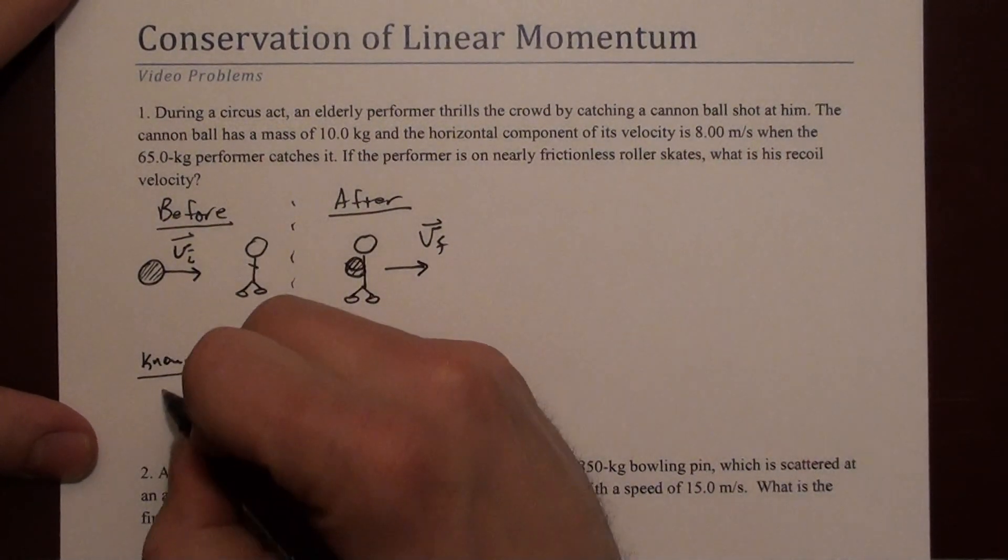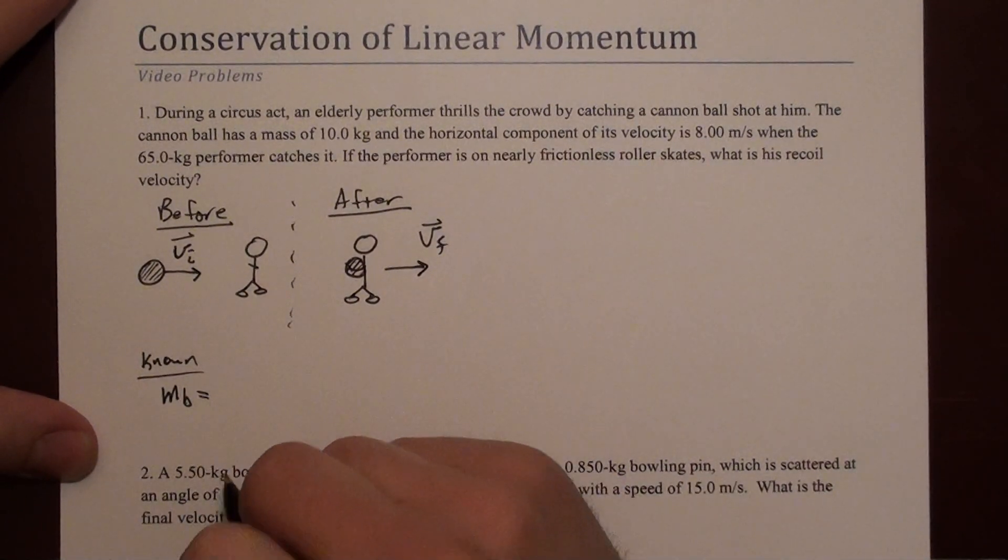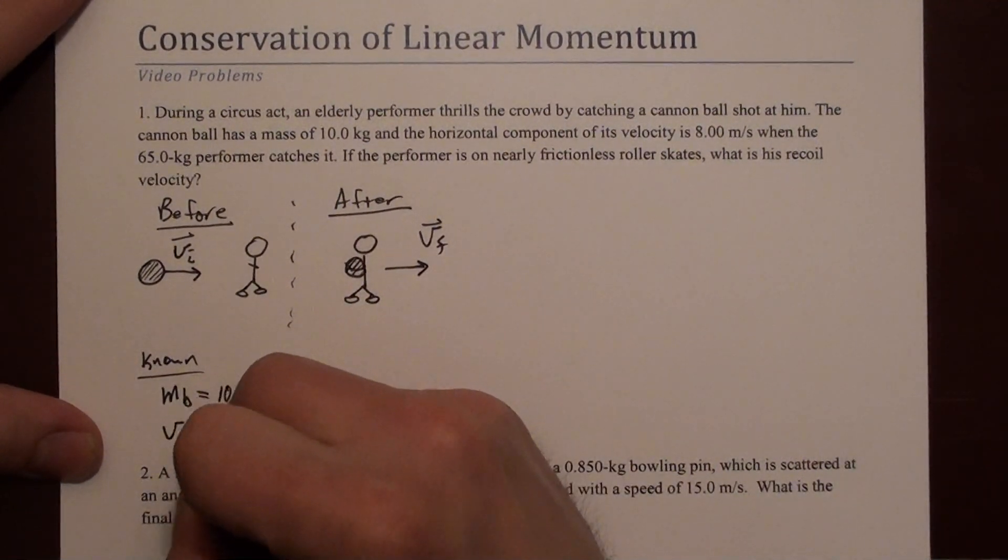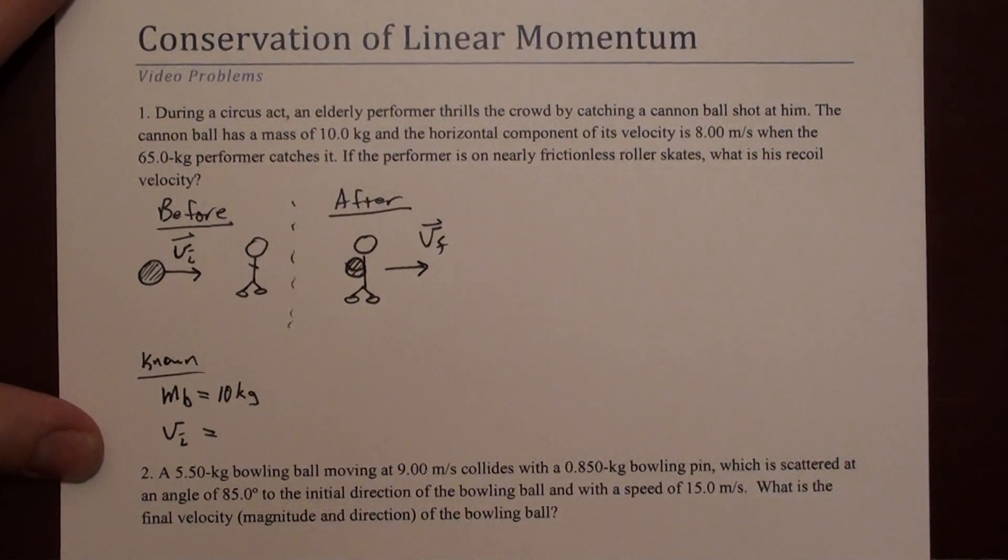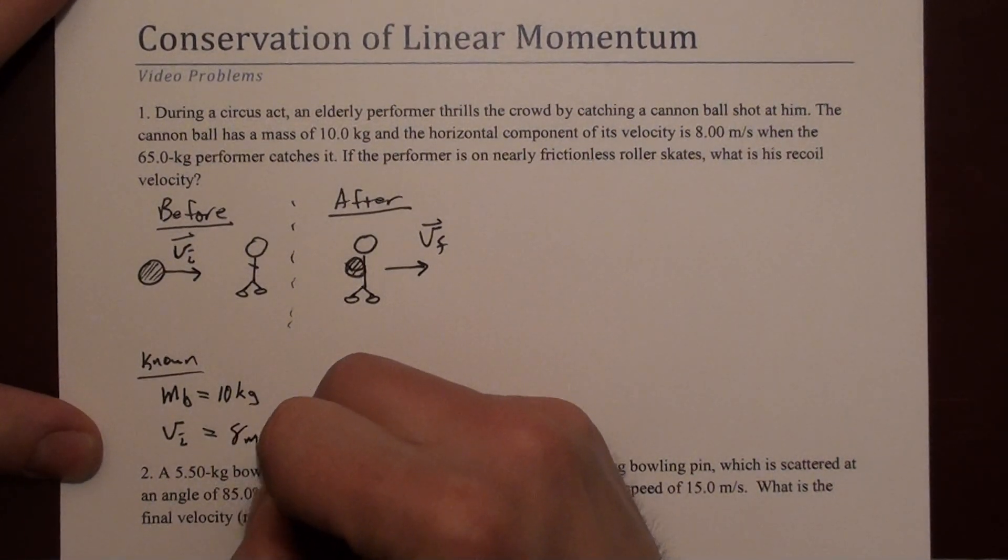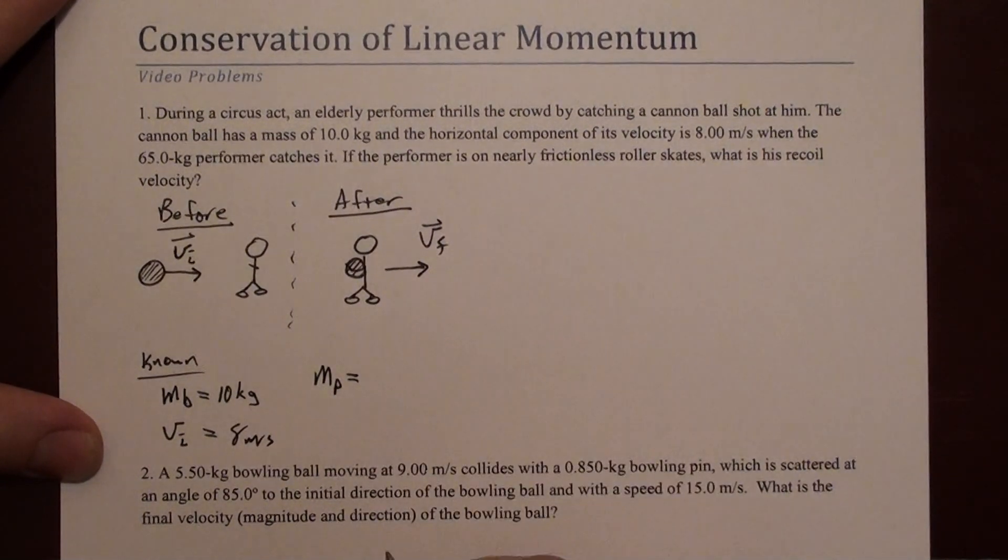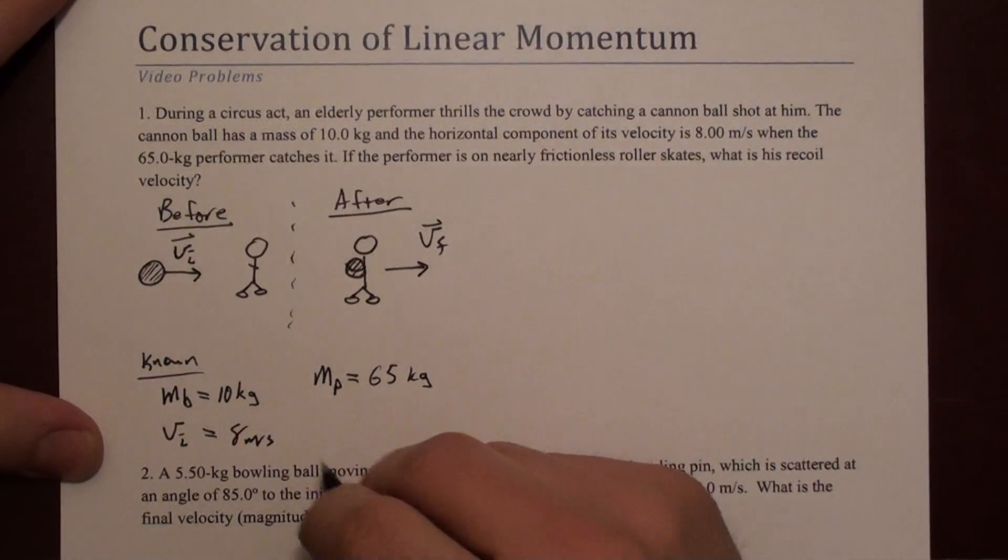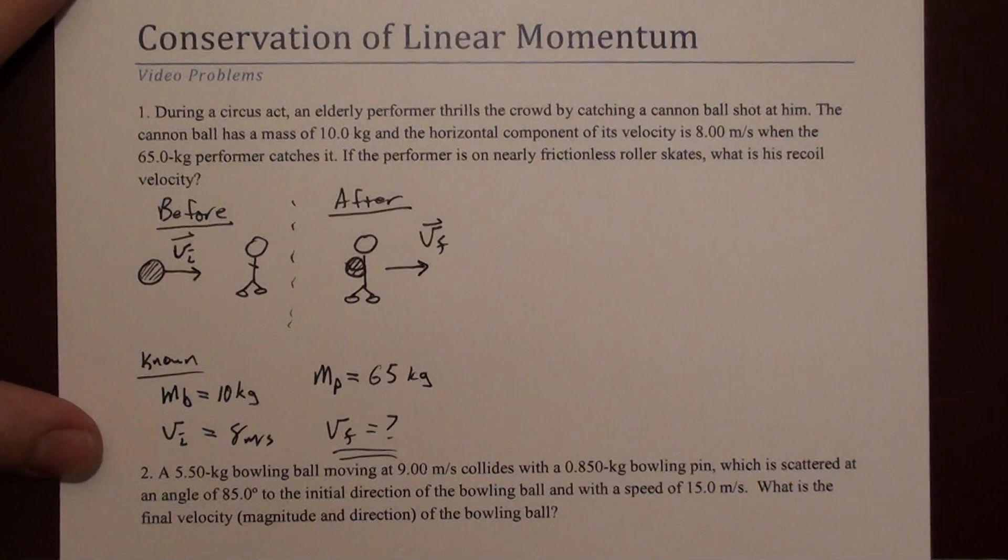Let's write down some things that we know first. We know the mass of the ball is 10 kilograms. We're given v initial for the cannonball as 8 meters per second. We're given the mass of the performer, which is 65, and we are looking for v final.